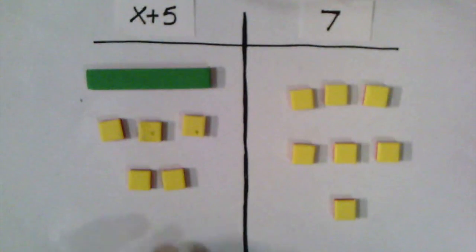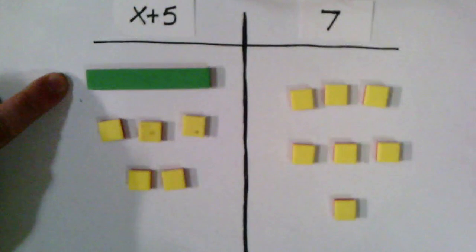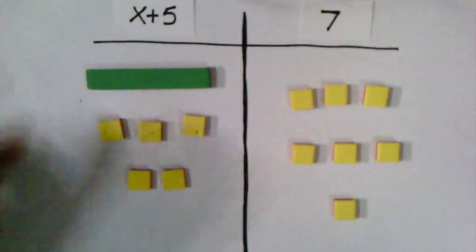By creating zero pairs, I can eliminate that value of 5 so that this side only has a value of x. So I'm going to take red tiles and match them up with each of those yellow tiles on the left side.